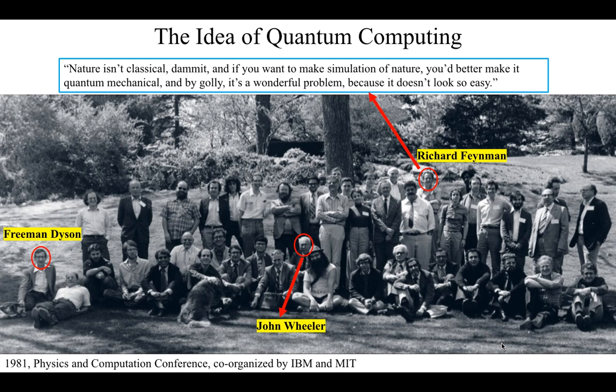The idea of quantum computing is not something new. In 1981, Richard Feynman, at the first Physics and Computation Conference co-organized by IBM and MIT and held at MIT, gave a talk titled 'Simulating Physics with Computers,' in which he argued that classical computers are inherently incapable of simulating physics and nature in general. He famously said: 'Nature isn't classical, damn it, and if you want to make a simulation of nature, you'd better make it quantum mechanical — and by golly, it's a wonderful problem, but it doesn't look so easy.'